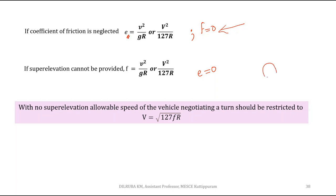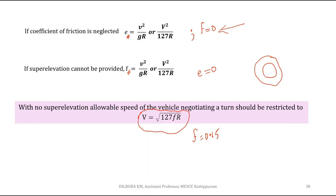In some cases like roundabouts, we may not be able to provide super elevation. In that case, the frictional coefficient must counteract the entire centrifugal force. We can allow vehicle speed up to a maximum of V = √(127×f×R). Since the maximum value of f is 0.15, we must restrict speed in that area to prevent overturning or skidding of the vehicle.